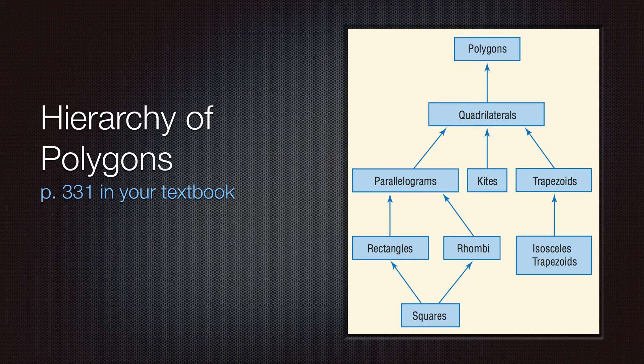In terms of this hierarchy of polygons, by the way, this is page 331 in your textbook. We see that all rectangles are parallelograms, but not all parallelograms are rectangles. Some special types of parallelograms are rectangles, the ones with right angles. Take a look at page 331 in your textbook. It's good reading.